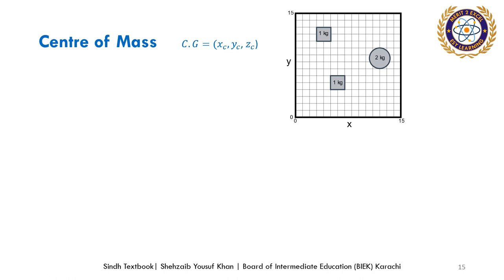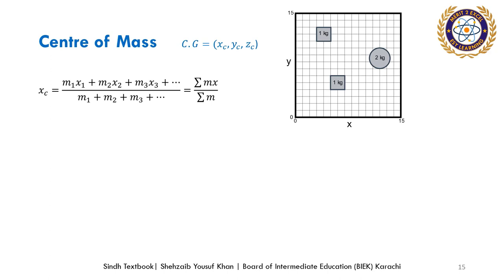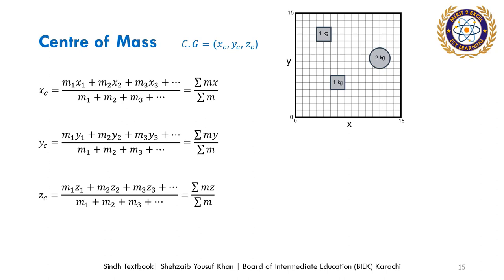To find the coordinates of the center of mass, we use the mean formula — which you also studied in statistics in metric class under information handling. For x_c, we take the sum of products of mass and x-location of each particle, divided by the sum of all masses. For y_c, we use the y-coordinates with their respective masses, and for z_c we use z-coordinates with their respective masses.